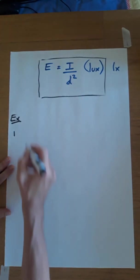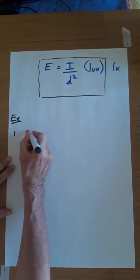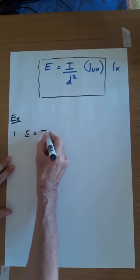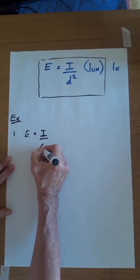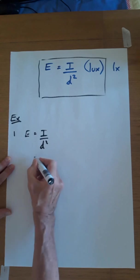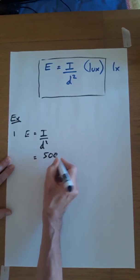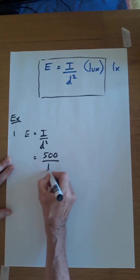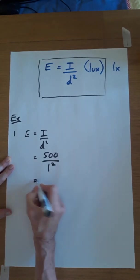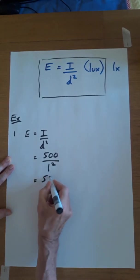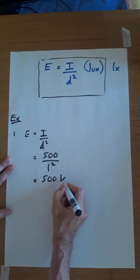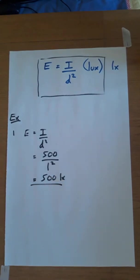So we're going to use this formula in example one. E equals I over D squared. The brightness of the lamp is 500 candela. The distance is 1. Don't forget to square it. And that's going to give you 500 LUX.